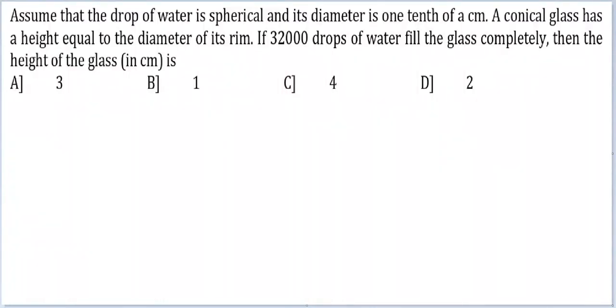Let's look at this question. Assume that a drop of water is spherical and its diameter is 1 tenth of a centimeter. So its diameter is equal to 1 millimeter, or r is equal to 0.5 millimeter for a drop of water.